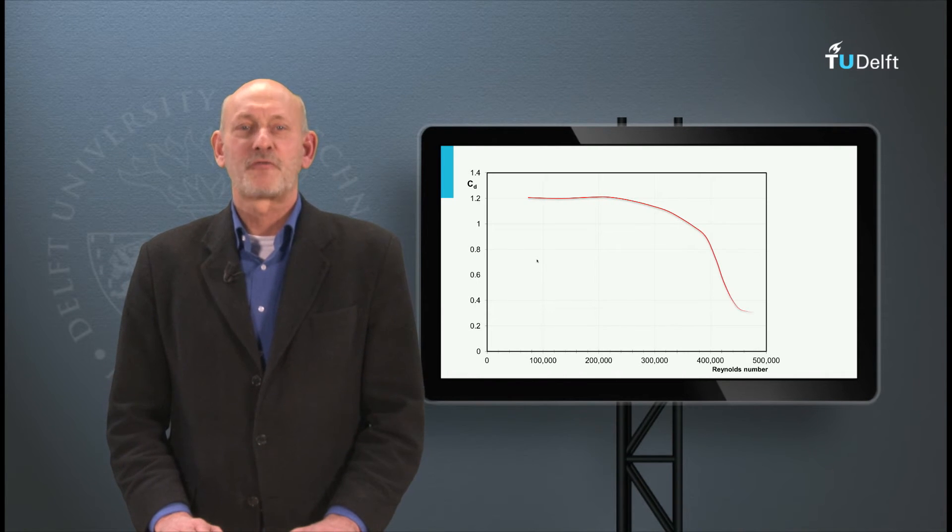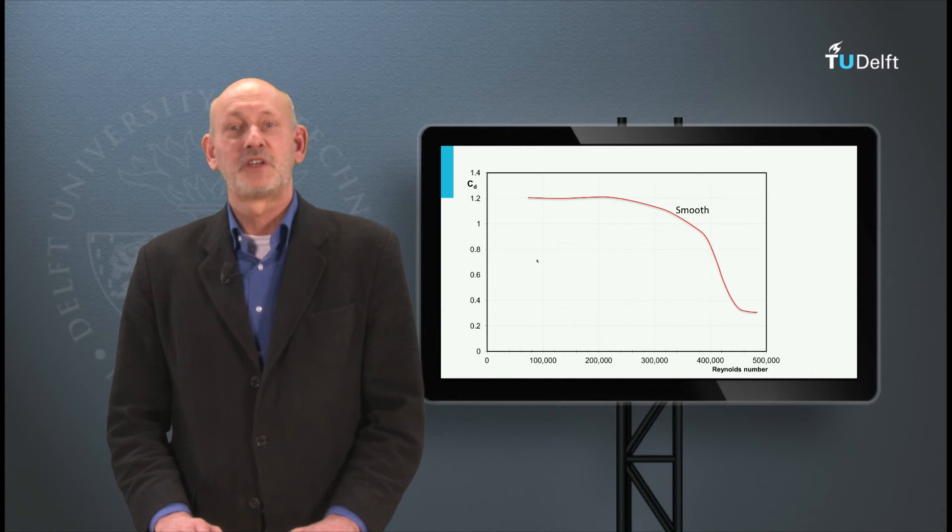Below this we call the flow subcritical. You can see that the drag coefficient has gone down from 1.2 at the subcritical level to 25% of the initial value.